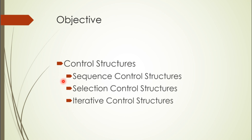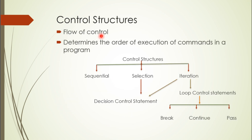Control structures is a flow of control of a program. It determines the order of execution of statements or commands in a program. There are three types of control structures according to the order of execution: first is sequential, second is selection, and third is iteration.